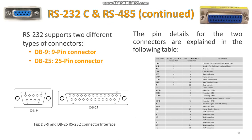RS-232C supports two types of connectors: DB9 and DB25. The DB9 consists of 9 pins and DB25 consists of 25 pins as shown in the diagram. The pin details of the DB9 and DB25 are shown in the table given, and we will see the functions of each pin in the later slides.